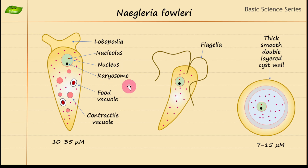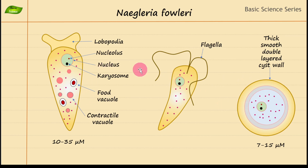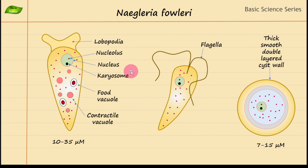PAM is a rare form of fatal brain infection. This organism can enter inside the human body through the nose during activities like swimming in a pond contaminated with this amoeba. It can travel to the brain through the nose, causing severe inflammation and tissue destruction, leading to headache, fever, seizures, and even coma. That is why it is also known as the brain-eating amoeba.